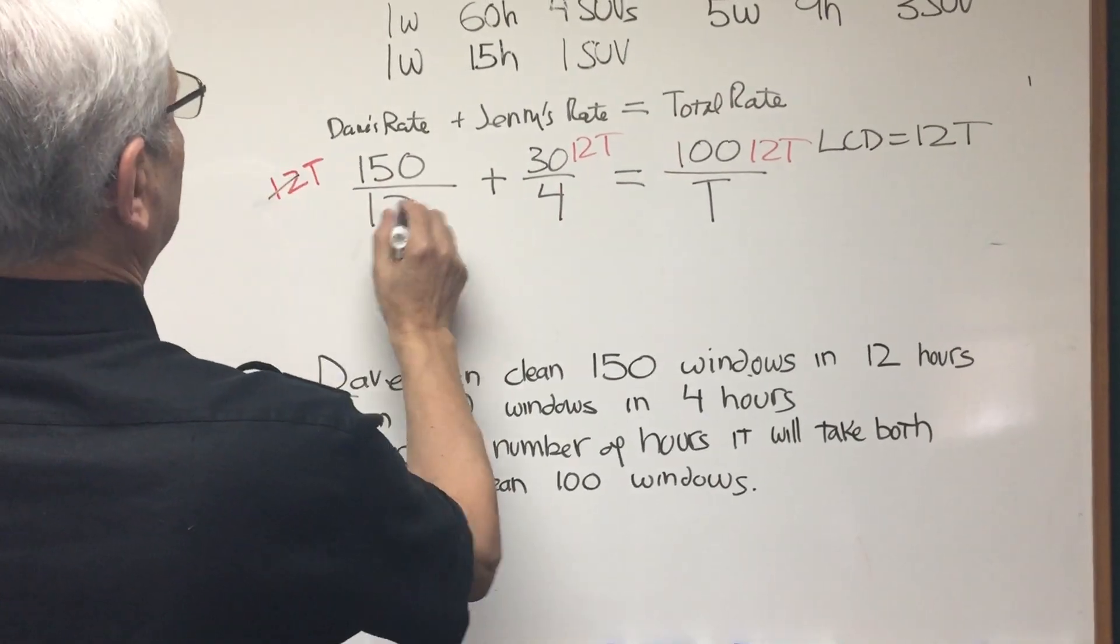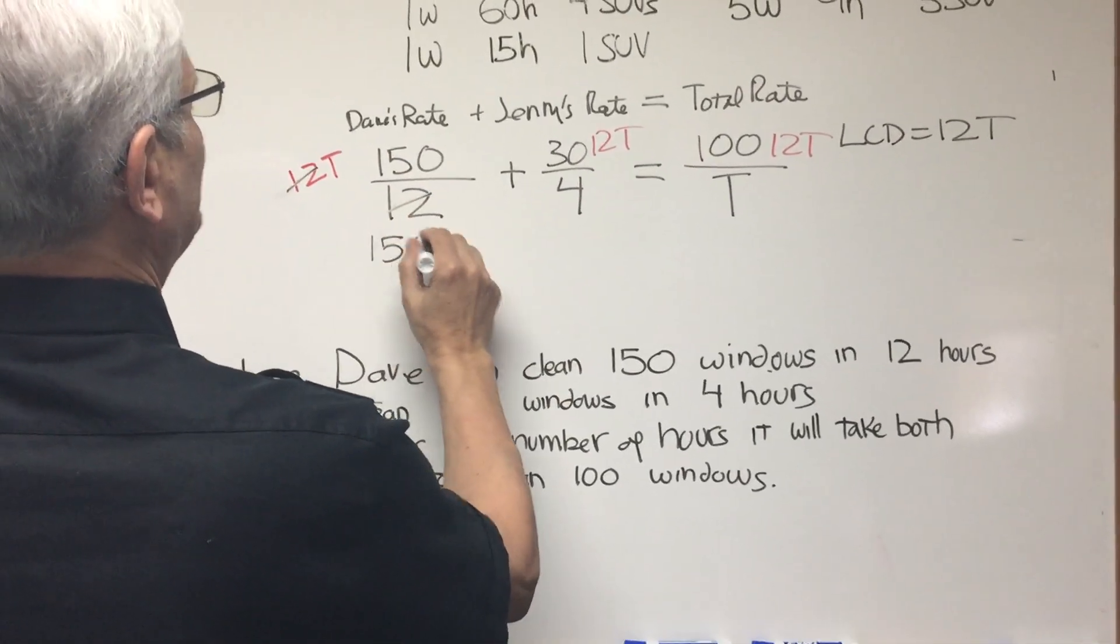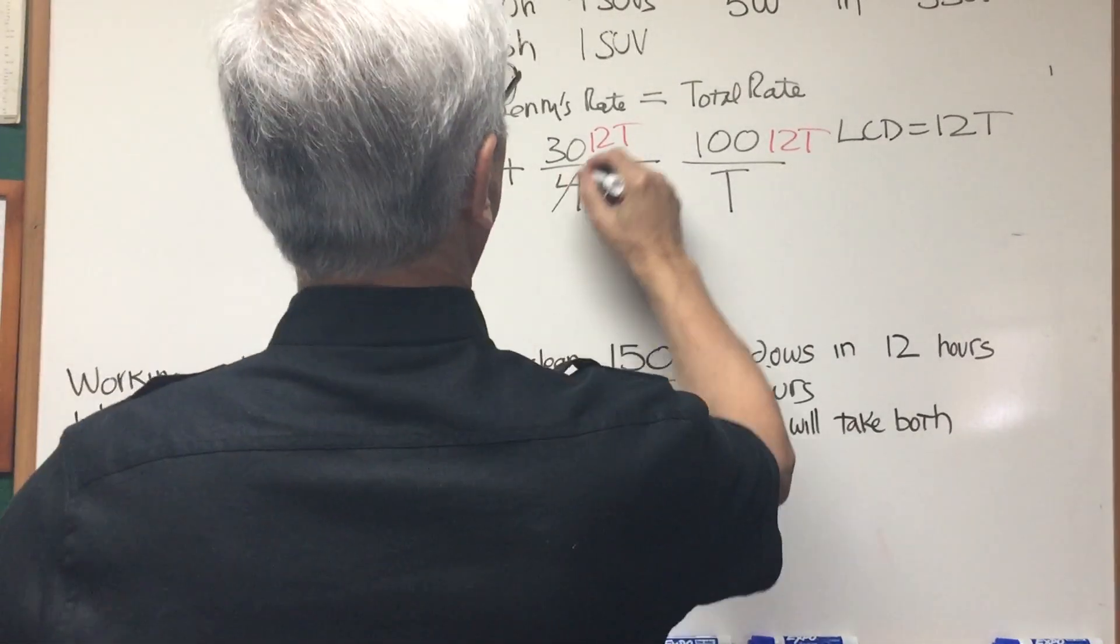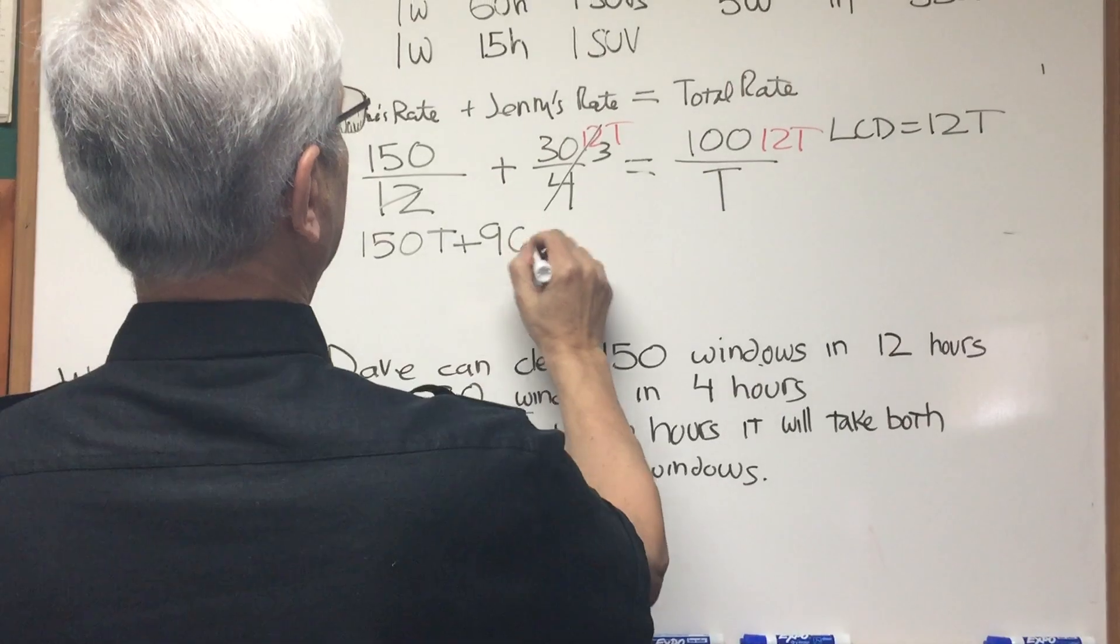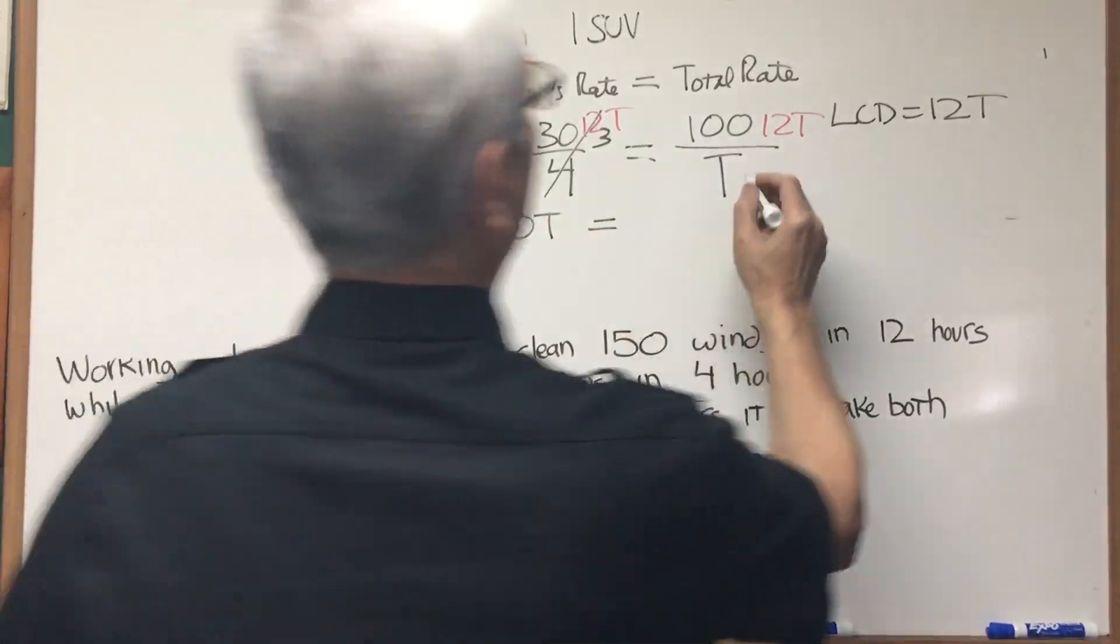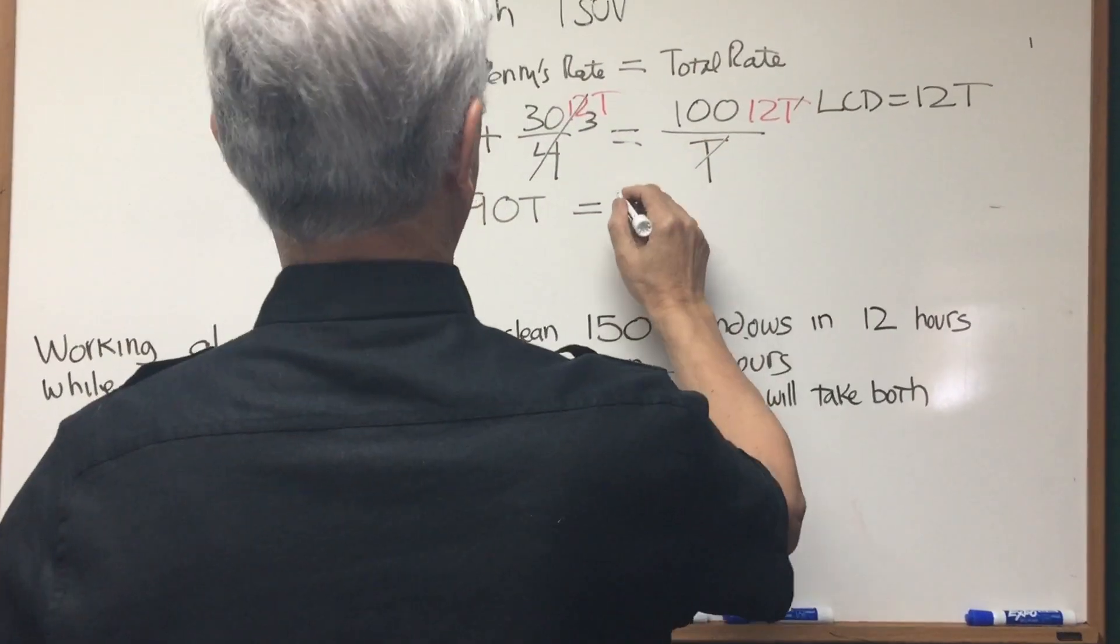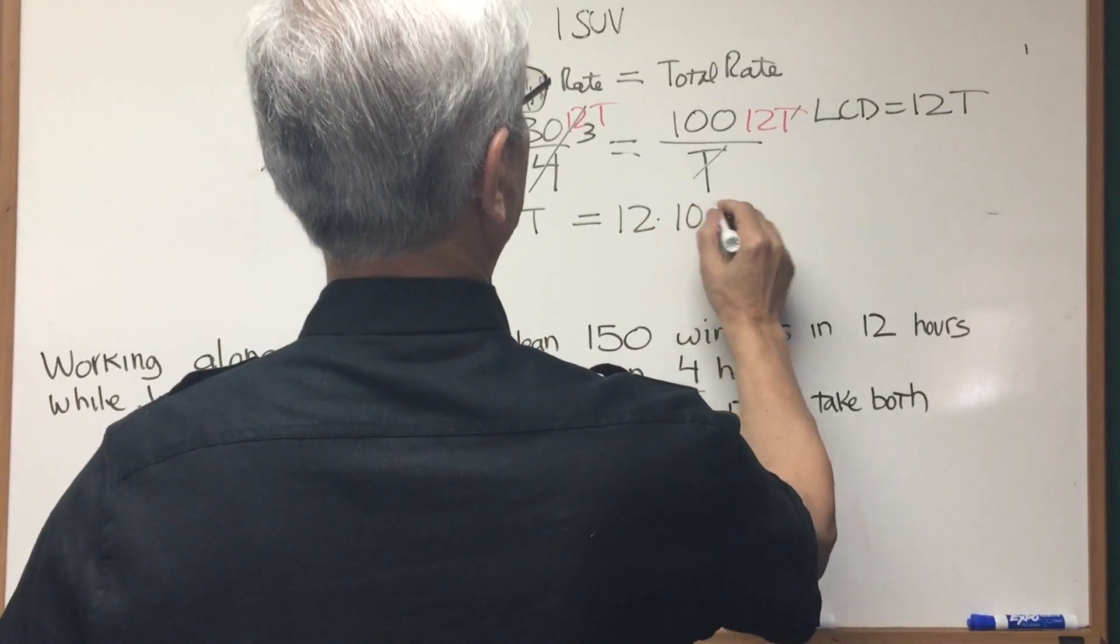And that's going to give us, the 12s cancel out, and we're left with 150T. And then 4 goes into 12, 3 times, 3 times 30 is 90T. And on the right side, the T's cancel out, 12 times 100 is 12 times 100.